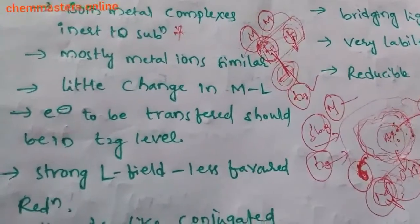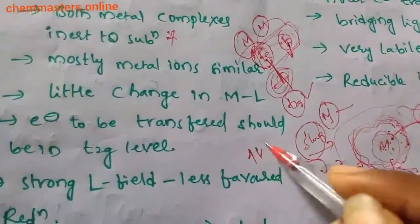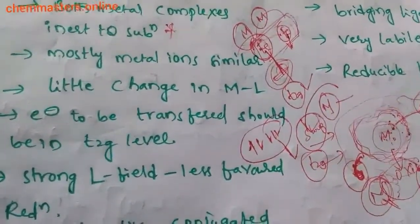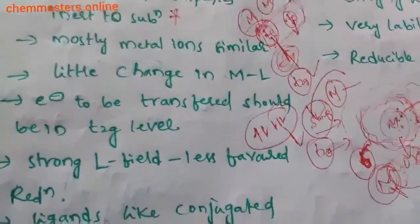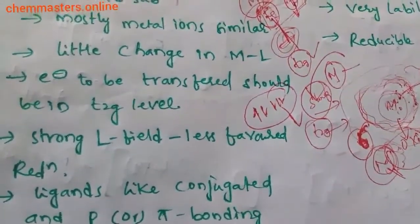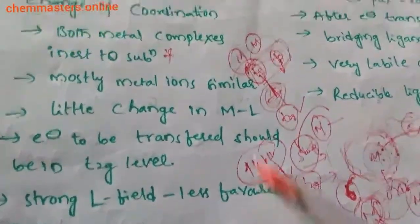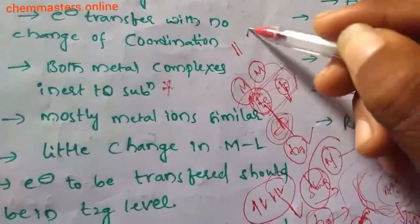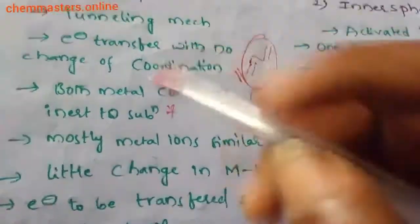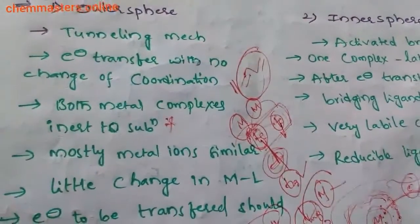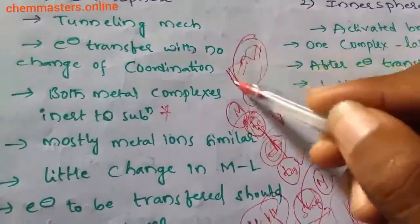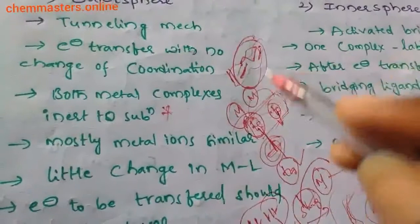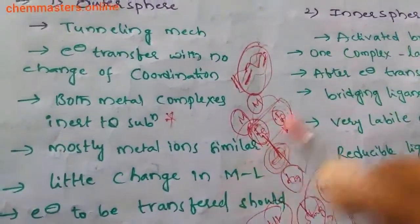Strong ligand fields favor less reduction, because pairing of electrons takes place and there is no room for another electron. Also, ligands with conjugated or pi bonding favor outer sphere mechanism. If there is continuity of pi bonding in a metal complex, the rate of outer sphere mechanism is higher. If there is discontinuity or less delocalization, the rate of outer sphere mechanism is lower.